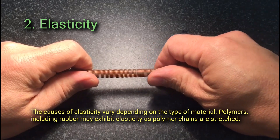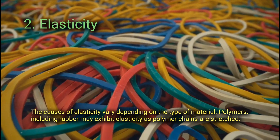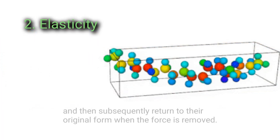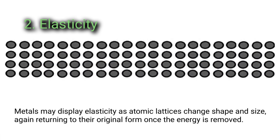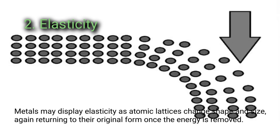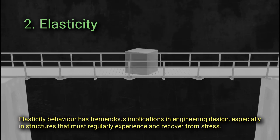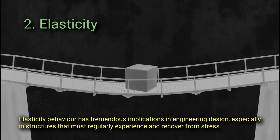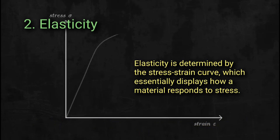The causes of elasticity vary depending on the type of material. Polymers including rubber may exhibit elasticity as polymer chains are stretched, and then subsequently return to their original form when the force is removed. Metals may display elasticity as atomic lattice changes shape and size, again returning to their original form once the energy is removed. Elasticity behavior has tremendous implications in engineering design, especially in structures that must regularly experience and recover from stress. Elasticity is determined by the stress-strain curve, which essentially displays how a material responds to stress.